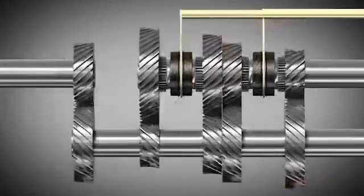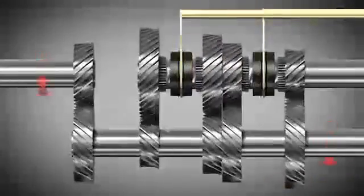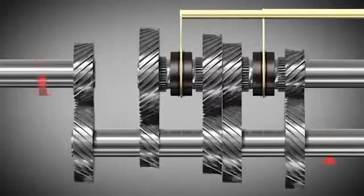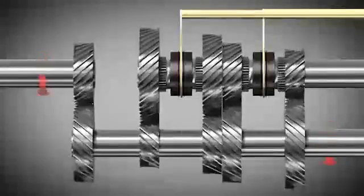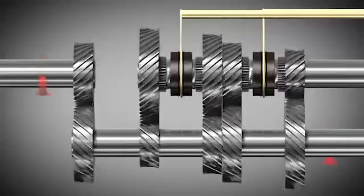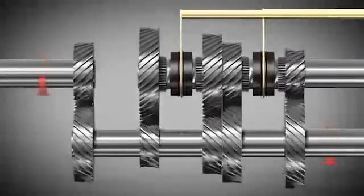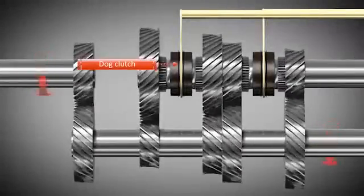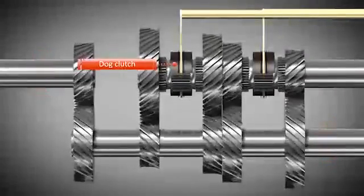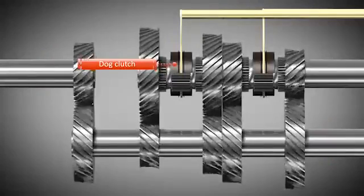The gear wheels of the input shaft and the counter shaft are fixed to their shafts. They rotate when their corresponding shaft rotates. However, the gear wheels of the output shaft are not fixed to the shaft and can freely rotate. Locking a gear wheel to the output shaft is possible through a dock clutch. Here, a tooth system is fixed to the shaft.